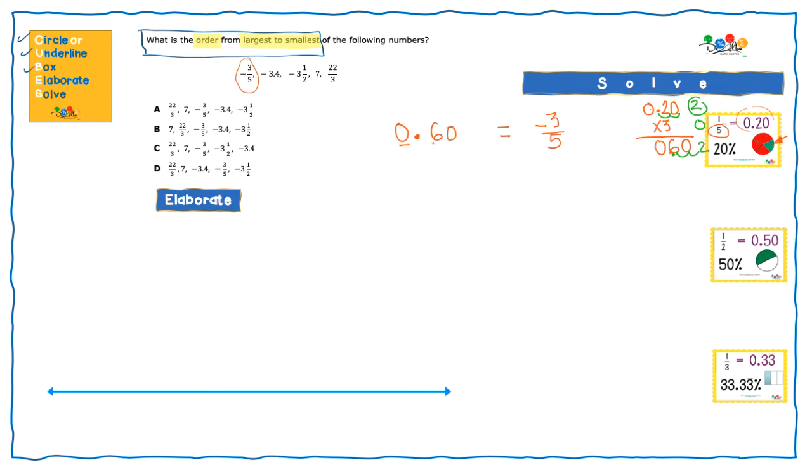The next number that we have is negative 3.4. That's an easy one because it's already in decimal form. So I'm just going to write it in here. I'm missing something from that number. Line up the decimal point first. Negative three, four, and then nothing here. So we can put a zero. On this one, I'm missing this negative. I'm going to bring it right here.